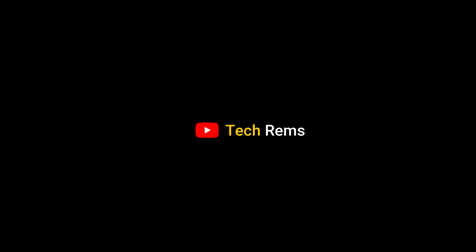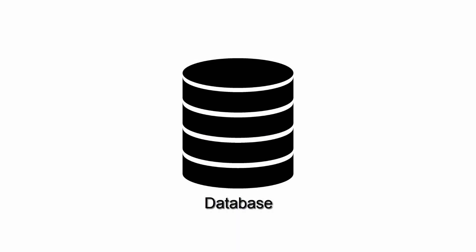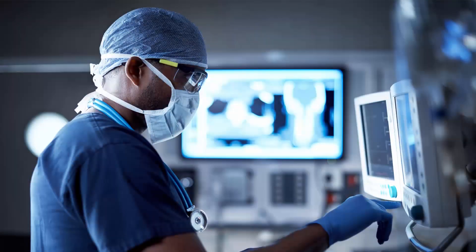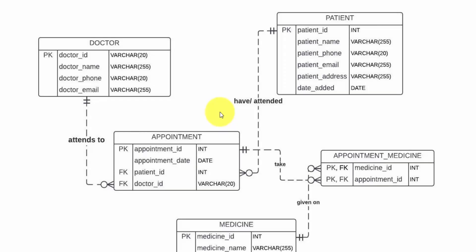Hi everyone and welcome back to TechReps. In this video we are going to create a database for a small clinic that will store patient records. We will be using this ER diagram to create the database with the following tables and relationships. Before we start writing the code, let's understand the diagram first.